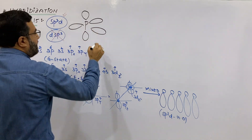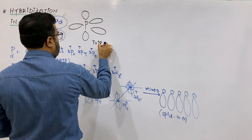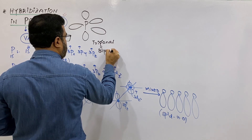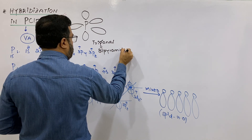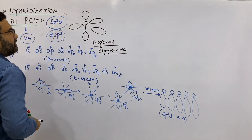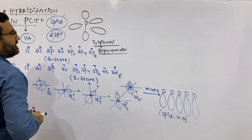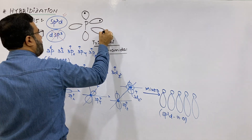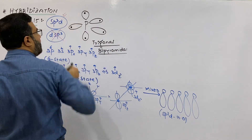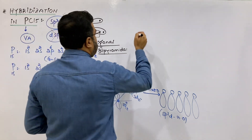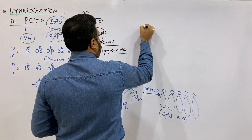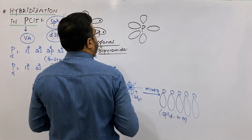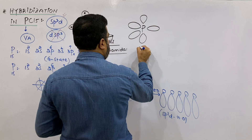These five SP3D hybrid orbitals will get arranged around the central phosphorus atom in a trigonal bipyramidal fashion. Every one of them will be having one electron, meaning they will be half-filled. In order to form a pair, they will overlap with the p orbital of chlorine.